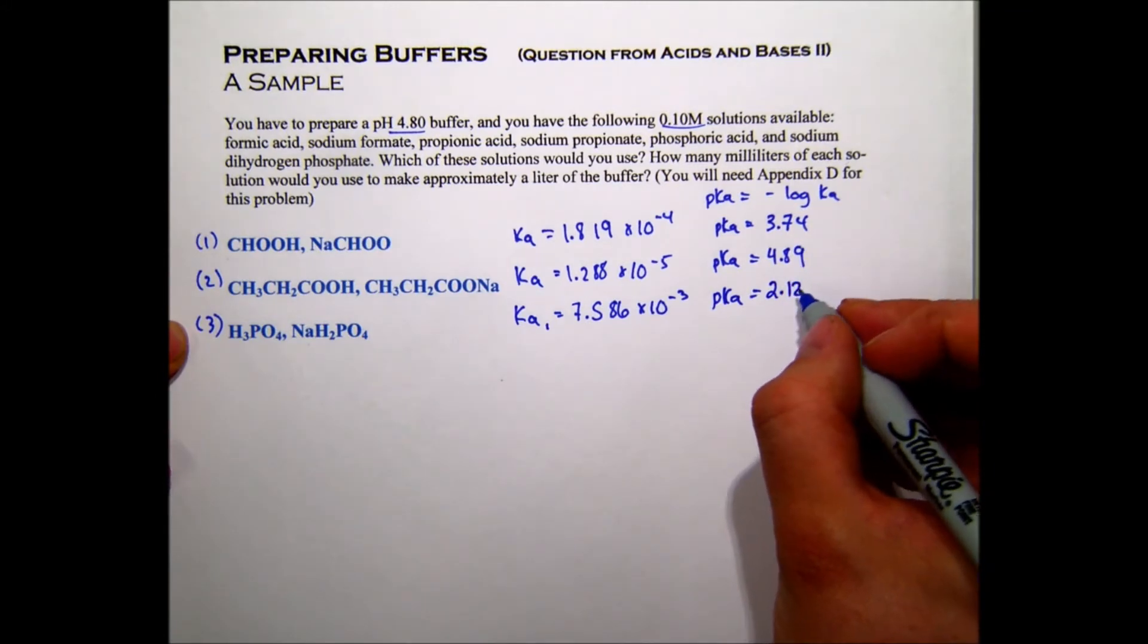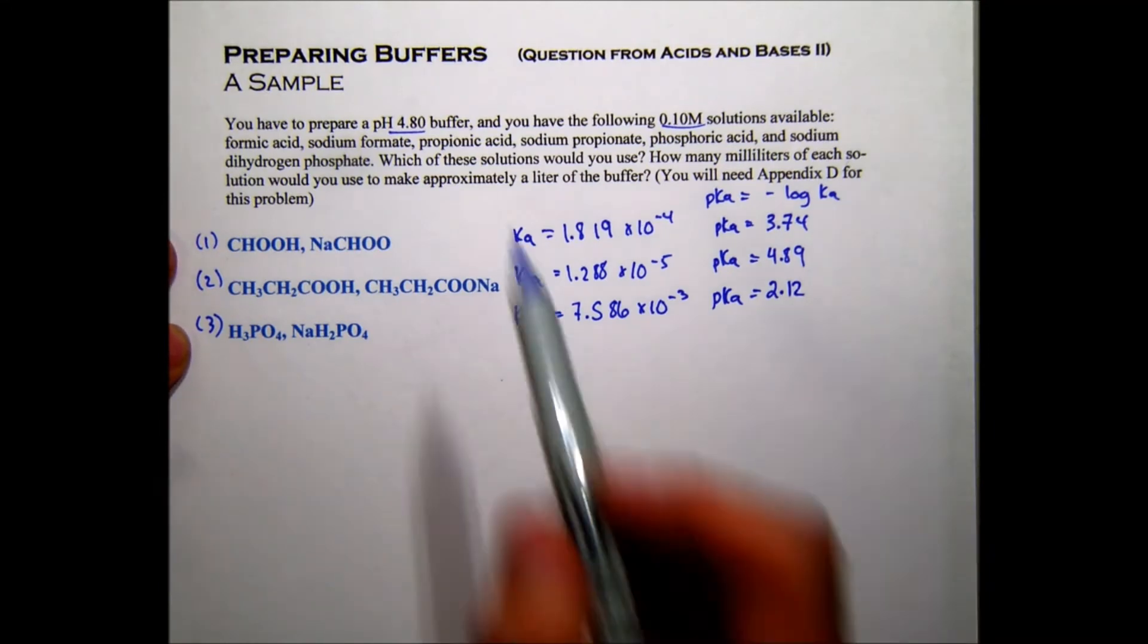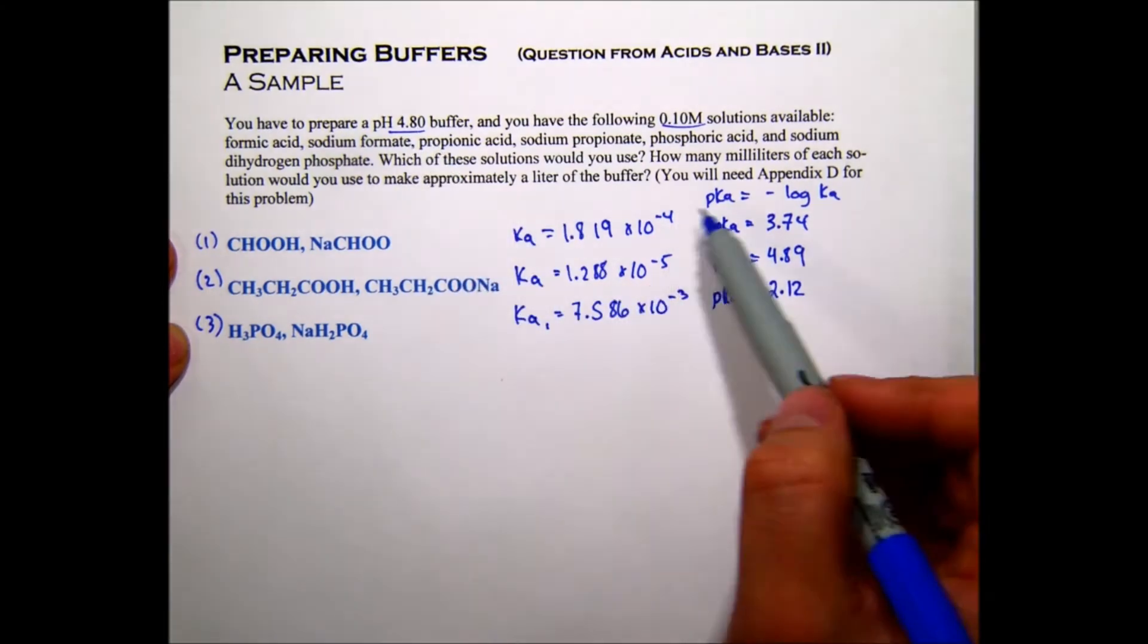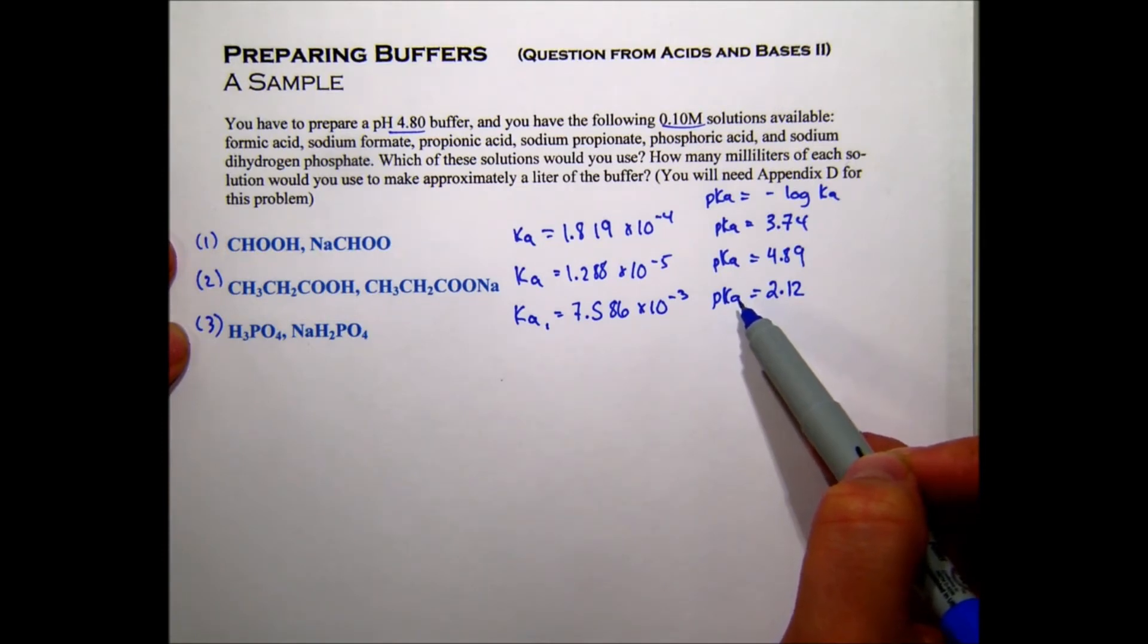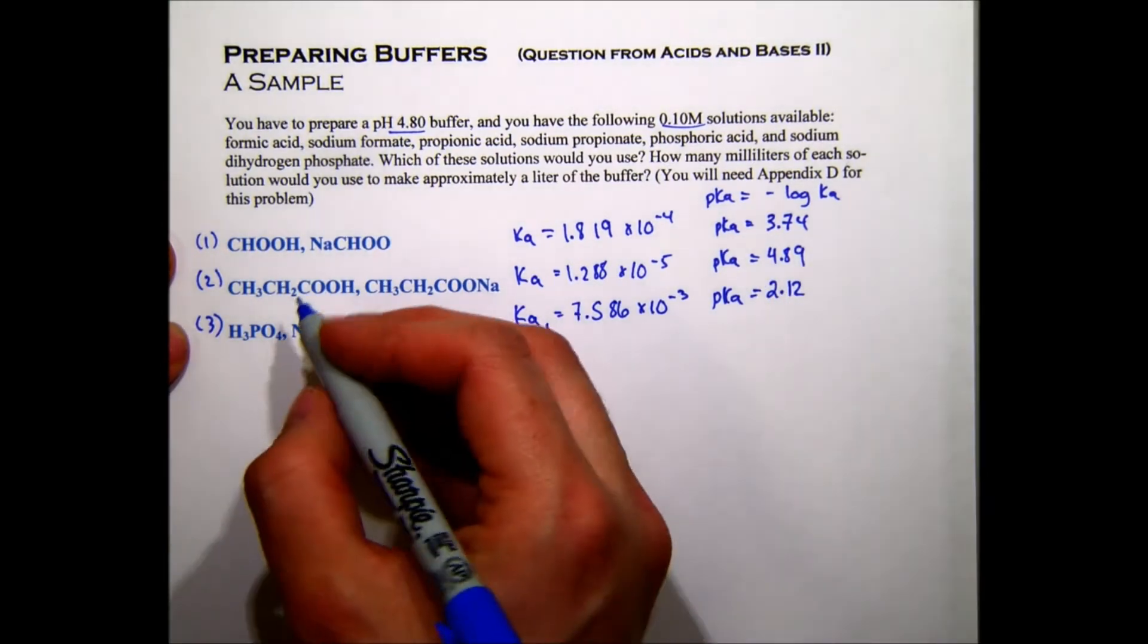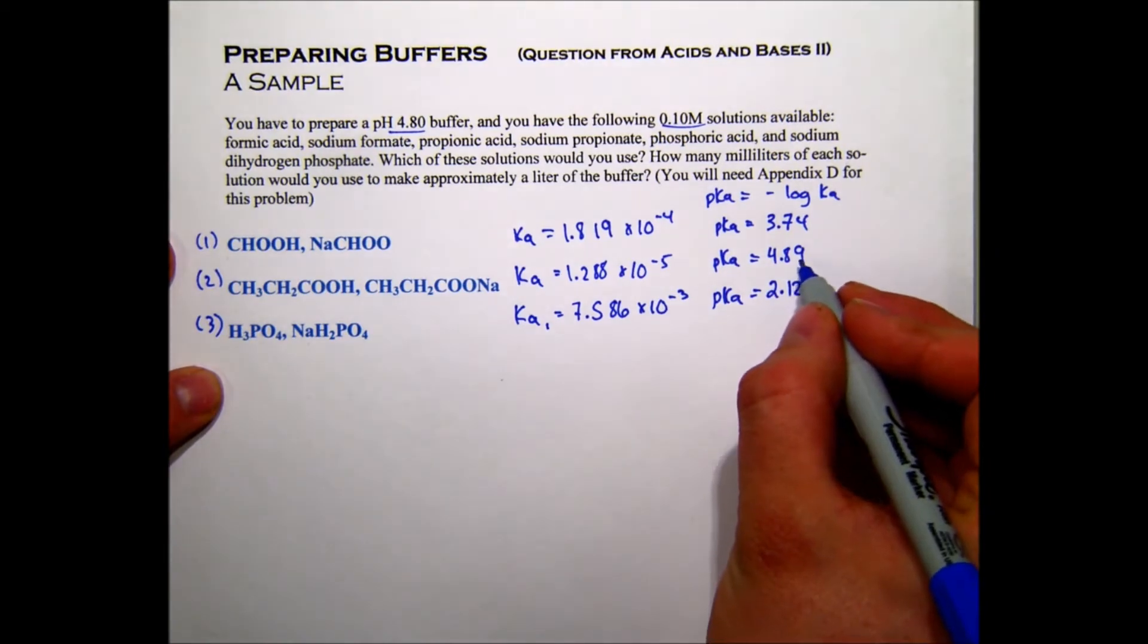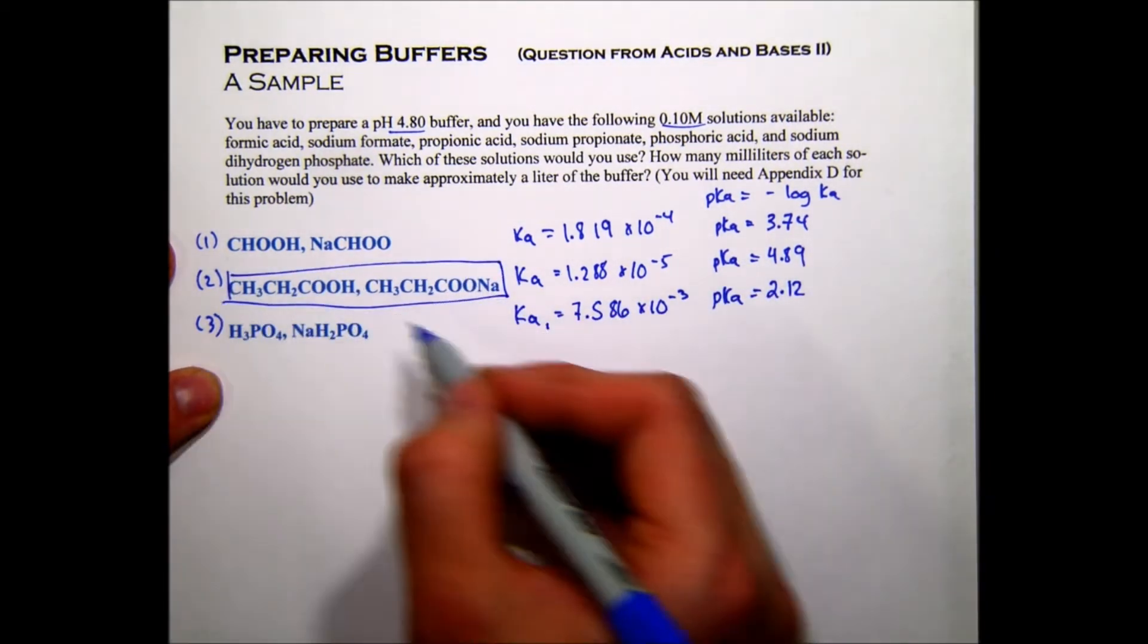So the lower this number is, the more acidic the solution is. The question wants us to pick the pair that's going to best get us a pH of 4.8. So we want our pKa to be as close as possible to that. And for the best effectiveness, we want the pKa to be within one pH unit. So I think the closest would be the propanoic acid pair.